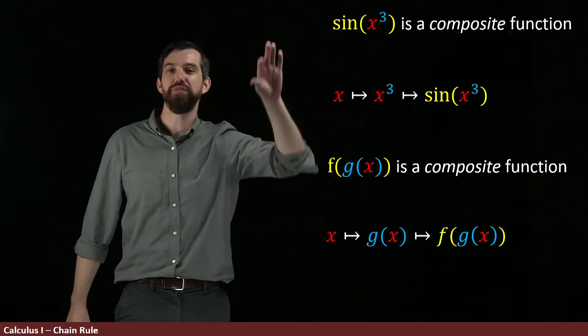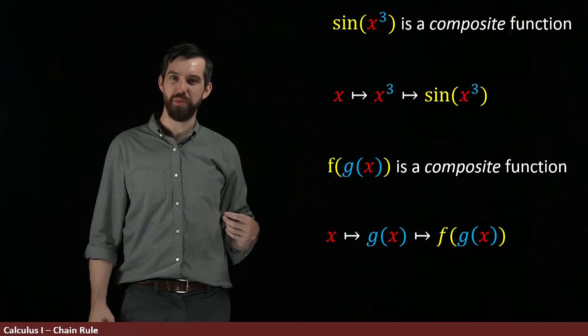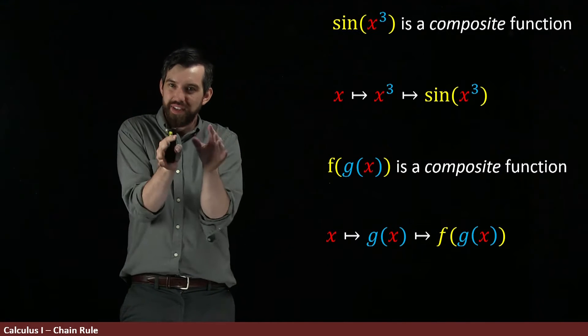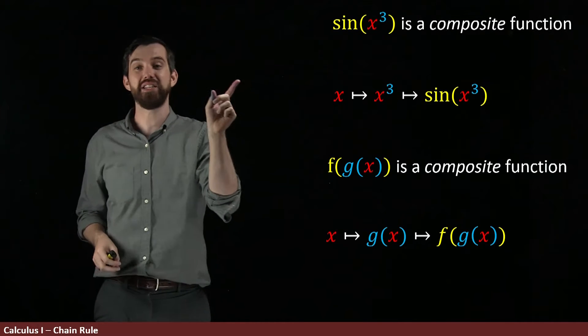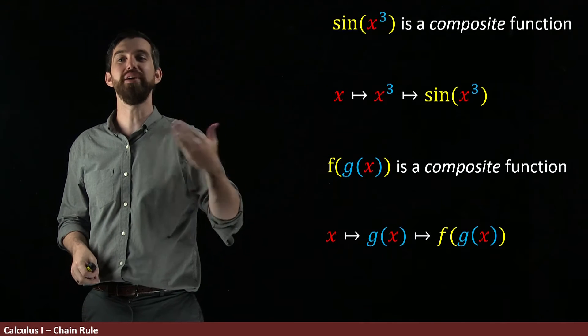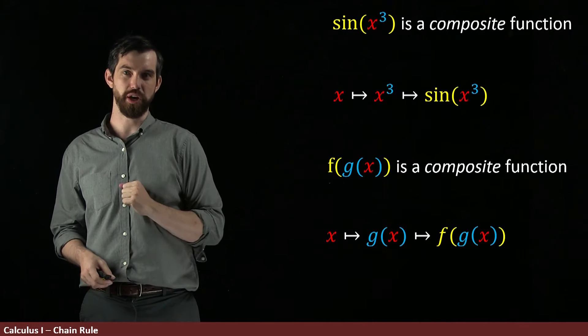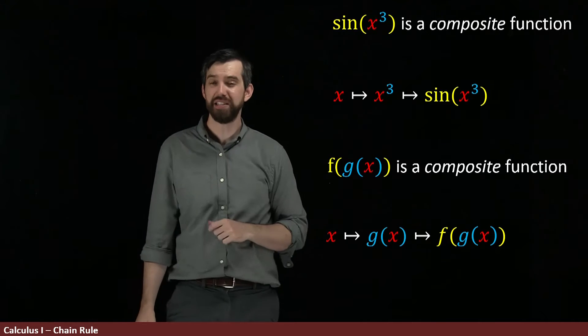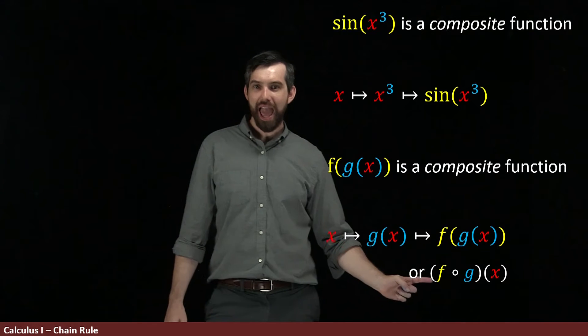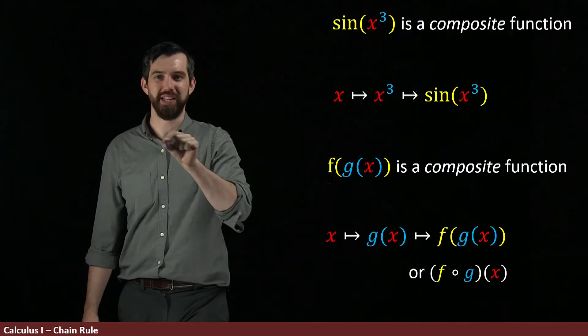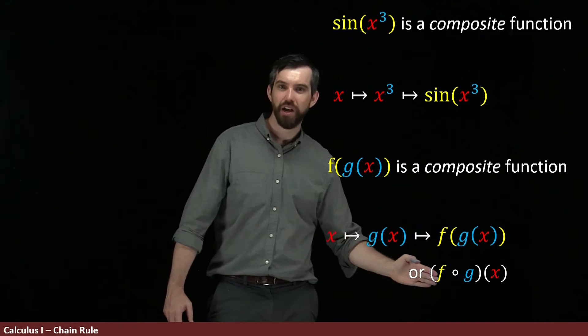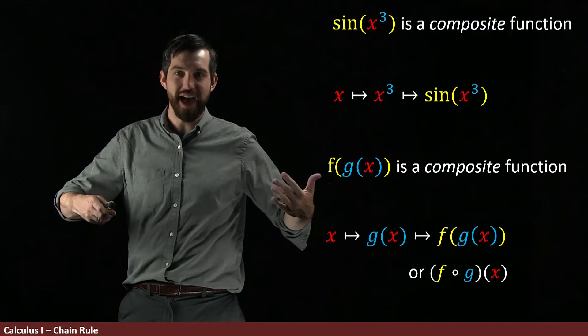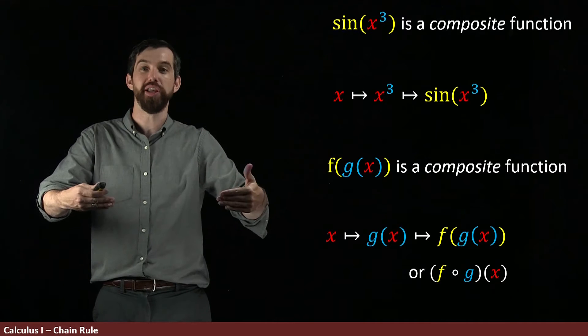So a whole bunch of different functions can be written in this way where you've got an outer function - that's the sine in this case - and you've got this inner function. Another way, by the way, notationally, to write this f of g of x that you might see is f, this little circular dot means composed, so f composed g of x. And you'll see both f of g of x and f composed g of x.